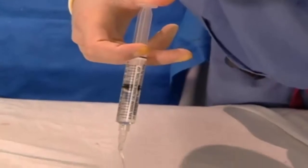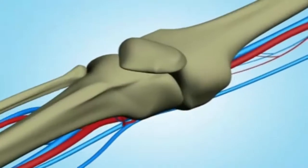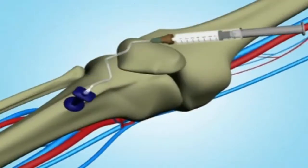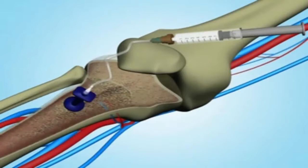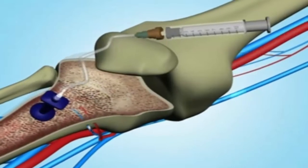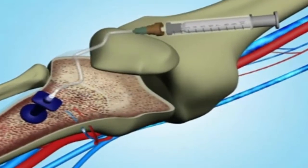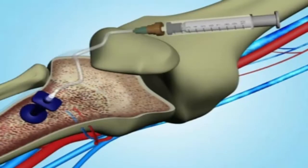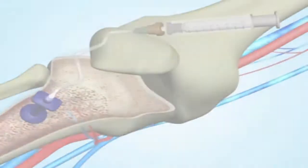Intraosseous administration of fluid and medications is possible since there are connections between the marrow cavity within bones and the systemic venous circulation. The cortex overlying the metaphysis of long bones is relatively thin and easy to penetrate. The underlying cancellous bone drains through venous sinusoids into nutrient vessels and emissary veins into the systemic venous circulation. Cannulation anywhere within the non-collapsible medullary cavity provides a reliable means of infusing medications or fluids into the systemic venous circulation.